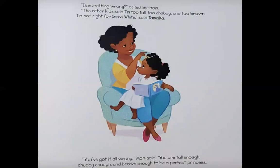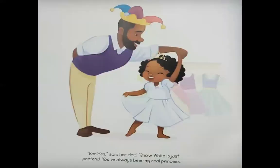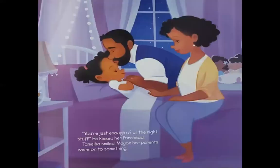'The other kids said I'm too tall, too chubby, and too brown — I'm not right for Snow White,' said Tamika. 'You've got it all wrong,' Mom said. 'You are tall enough, chubby enough, and brown enough to be a perfect princess.' 'Besides,' said her dad, 'Snow White is just pretend — you've always been my real princess.' Look at Tamika now — how does she feel? 'You're just enough of all the right stuff.' He kissed her forehead. Tamika smiled. Maybe her parents were onto something.